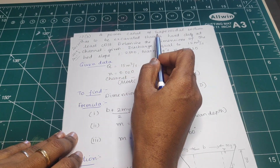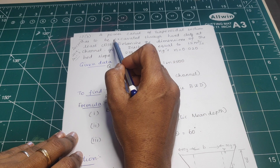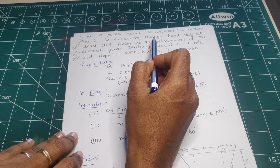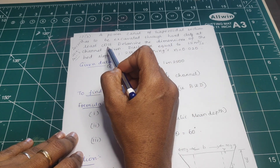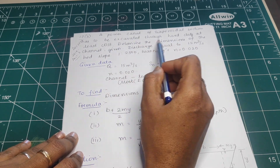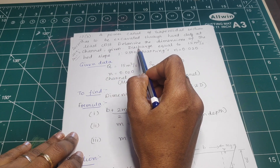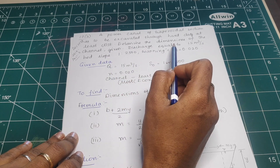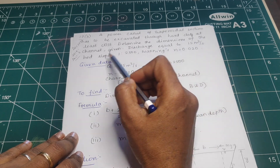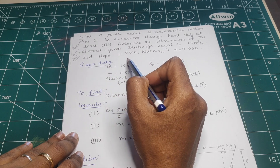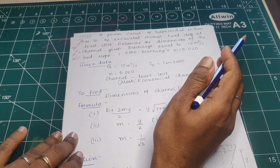A canal of trapezoidal section has to be excavated through hard clay at least cost. Determine the dimensions of the channel. In this case, discharge is equal to 15 m³ per second, and bed slope and Manning's constant are given.